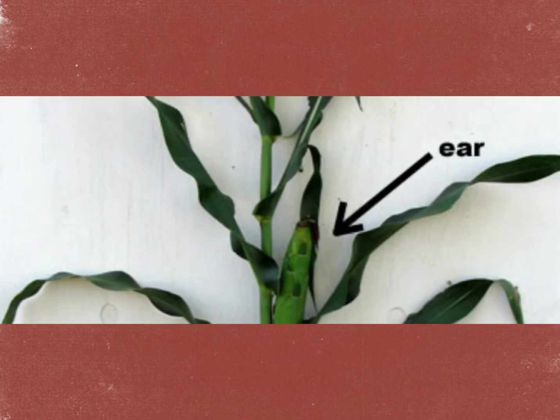The ear is the structure that contains the kernels that are forming after fertilization — the female part of the corn plant.